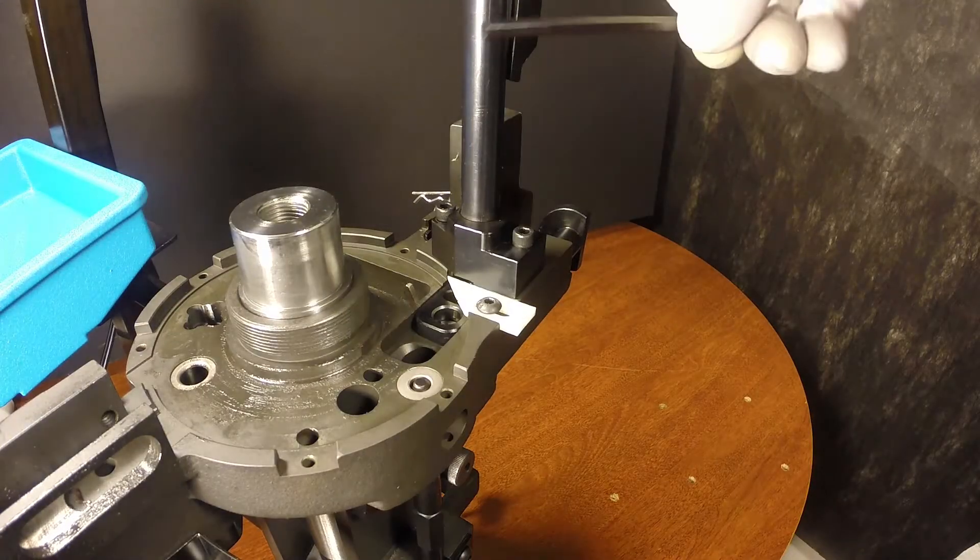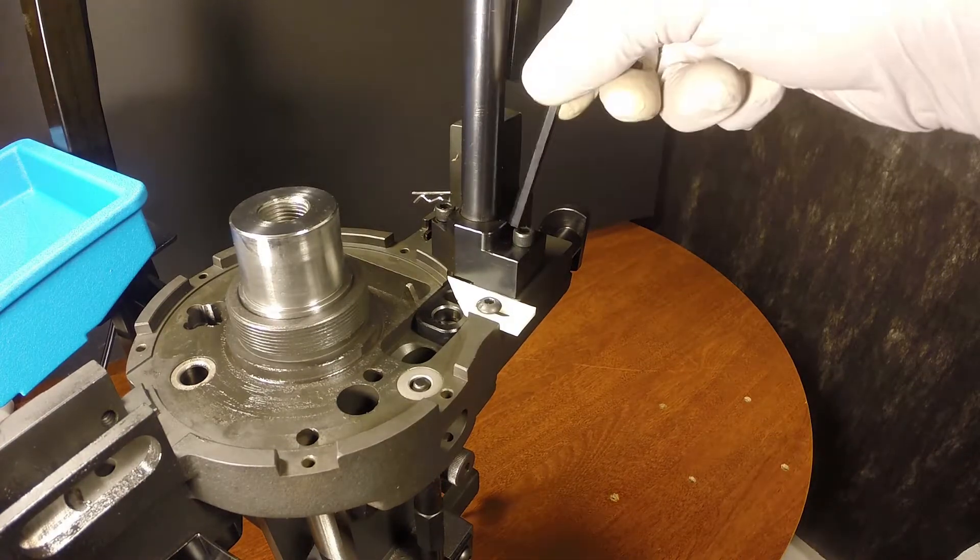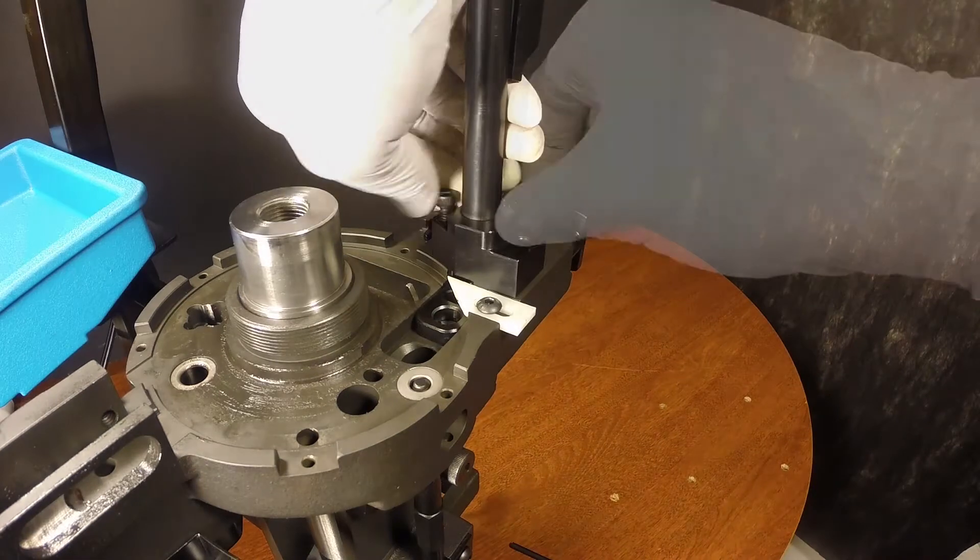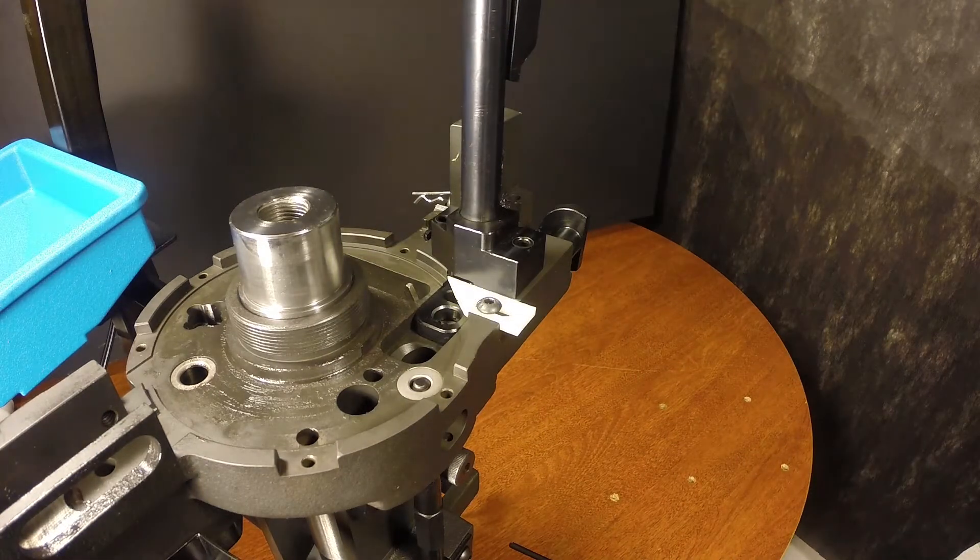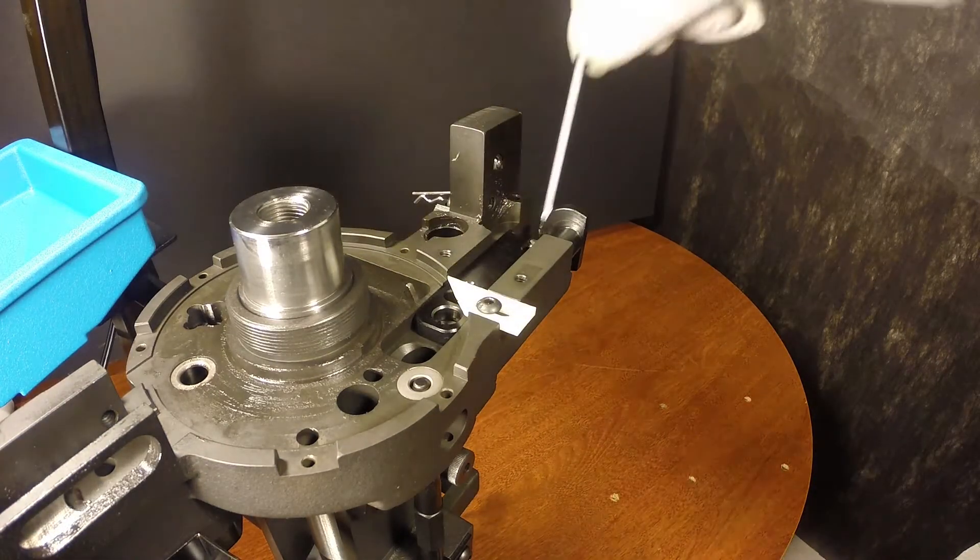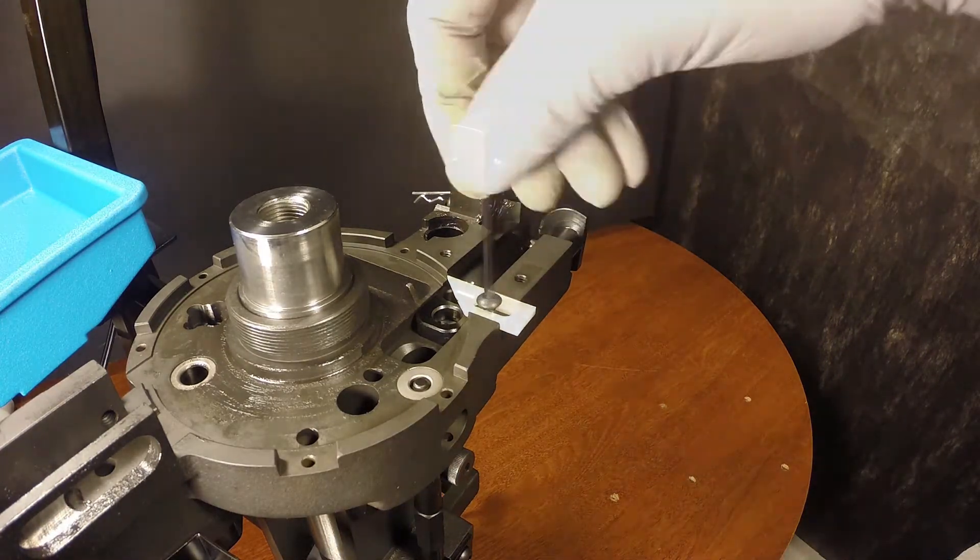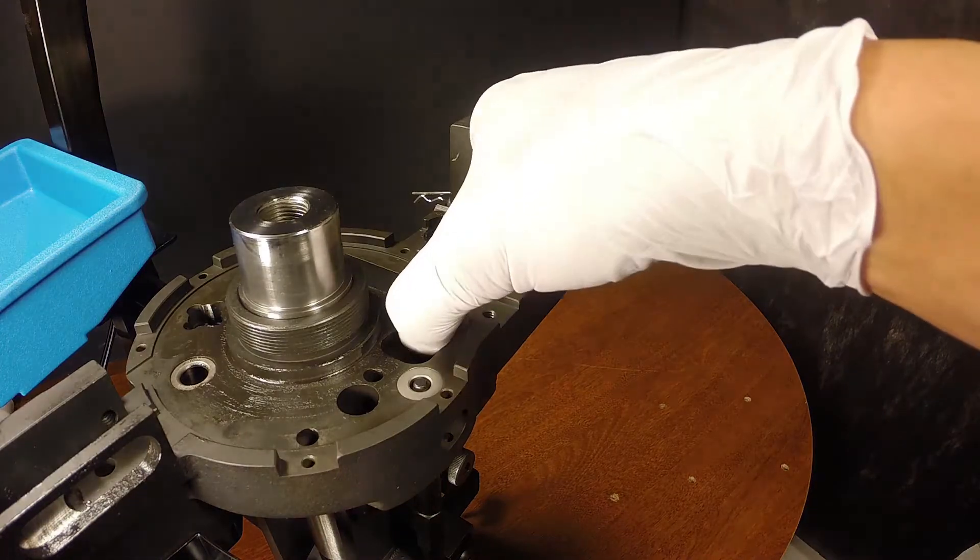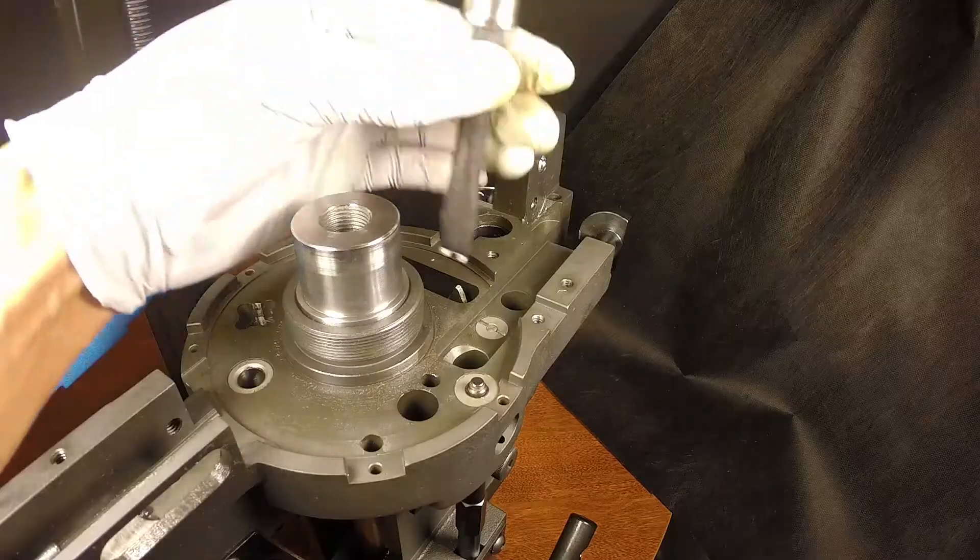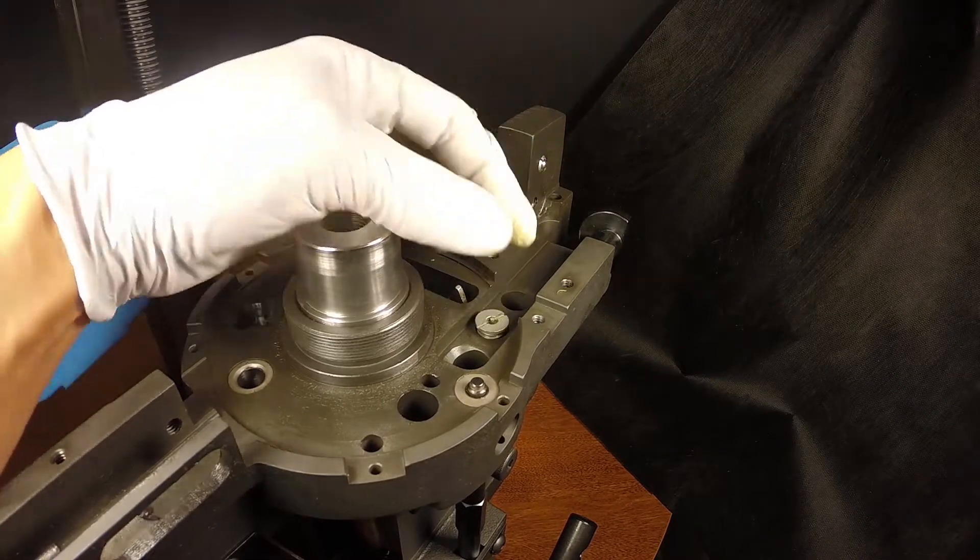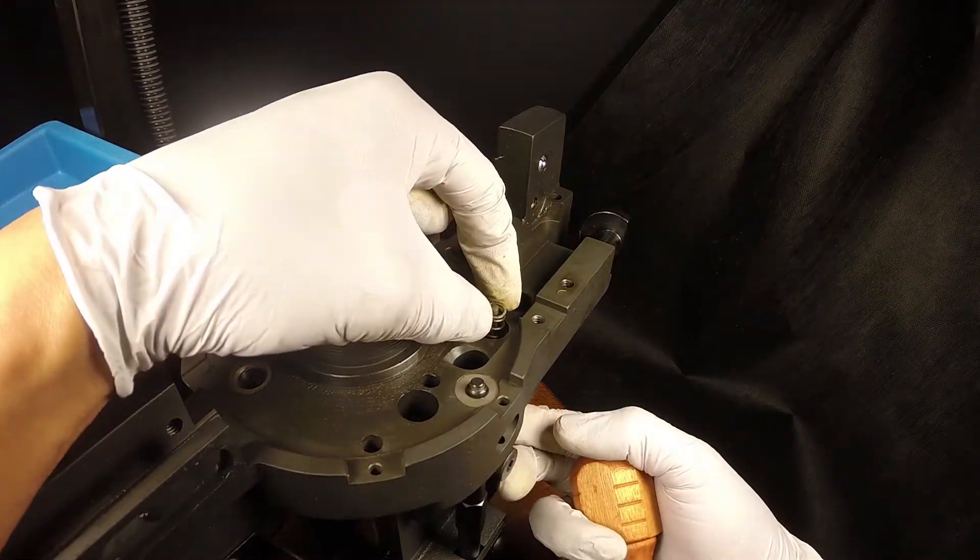To clean or replace the primer assembly, remove these two bolts. Remove the primer station retain tab and now you have access to the primer slide. Remove the bushing, spring, and punch with the specially designed screwdriver included in the accessory bag.